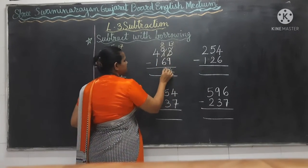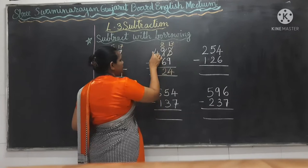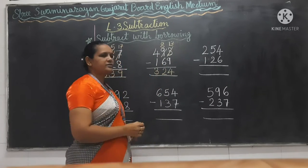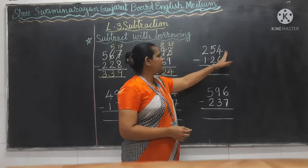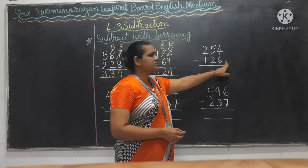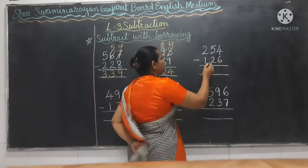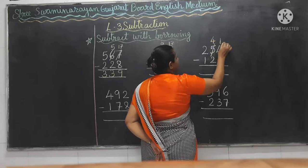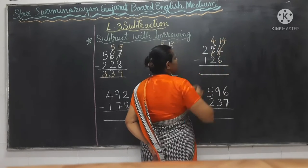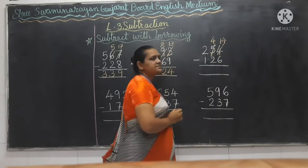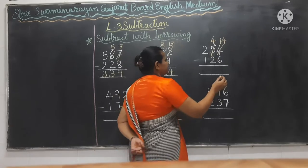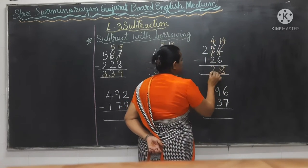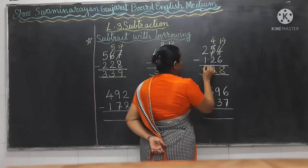8 minus 6 is 2; 4 minus 1 is 3. Now 4 minus 6 — so again you have to borrow. Now 13 minus 6 — yes, that is 8. And 4 minus 2 is 2, and 1.